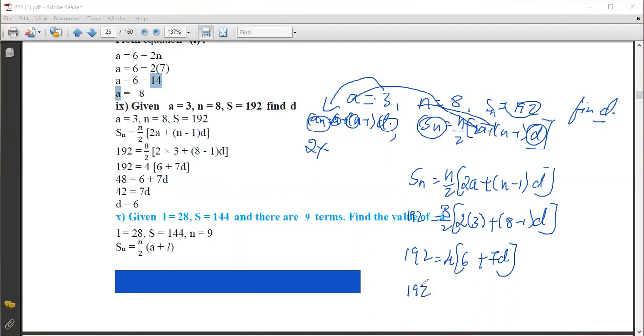Dividing both sides by 4: 192/4 = 6 + 7d. 192 divided by 4 equals 48.